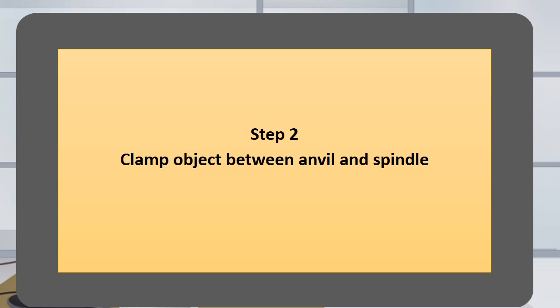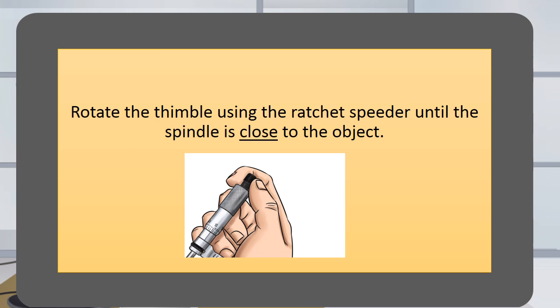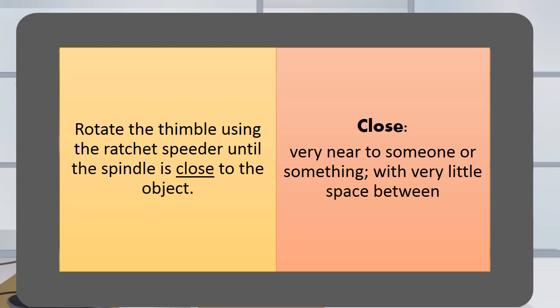Step 2. Clamp object between anvil and spindle. Rotate the thimble using the ratchet speeder until the spindle is close to the object. Close means very near to someone or something with very little space between.